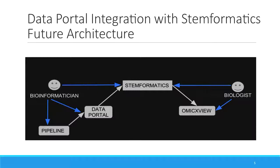How does the data portal integrate with Stem Informatics? Whenever a new dataset is requested, it comes from bioinformaticians and goes through the pipeline to process. After processing, they would go directly to Stem Informatics, but the data portal is integrated between them. It holds the pipeline data, stores it in cloud storage, and gives Stem Informatics access to grab and download it from the cloud storage.